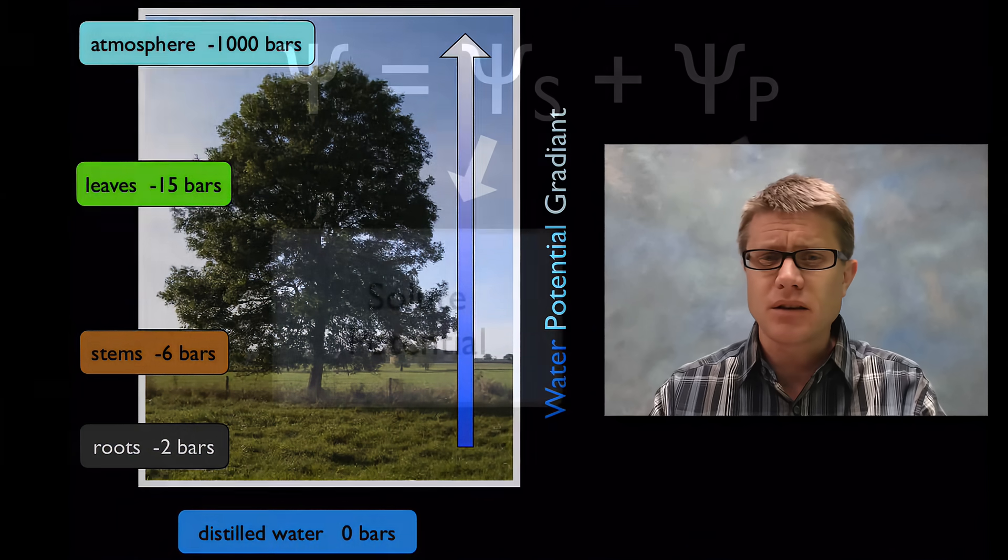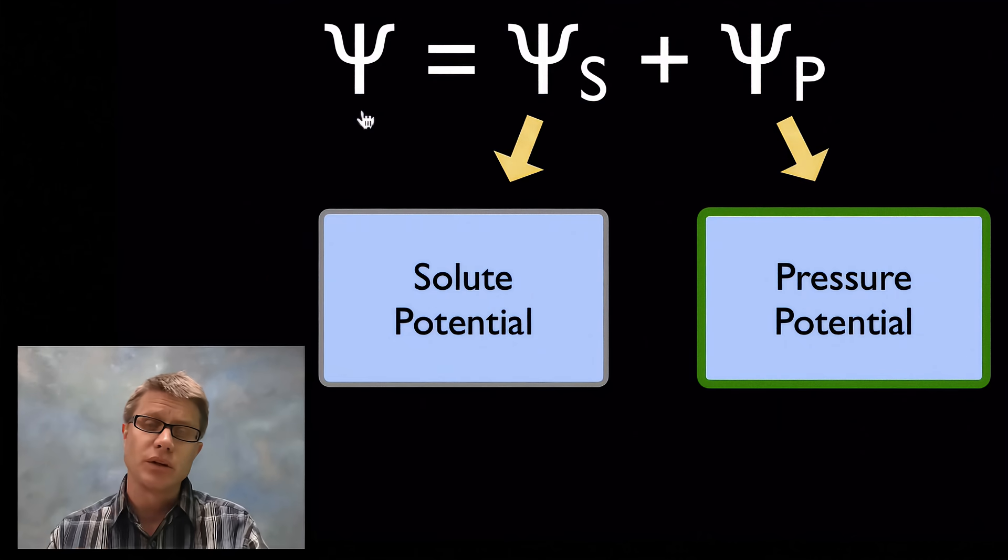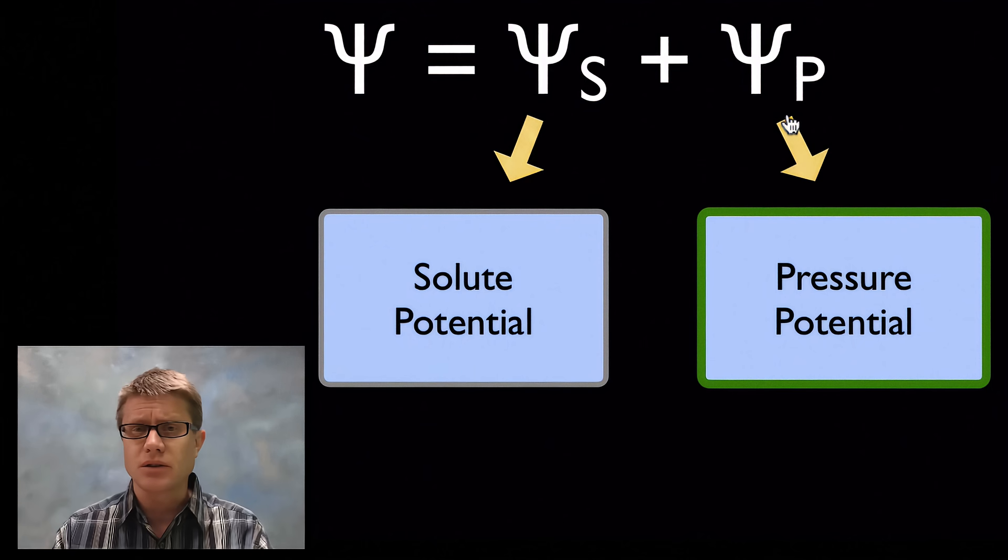Now let's get to those equations. So water potential is built on two things. It's built on the solute potential, think of that as like water flowing through osmosis, and then the pressure potential, and that's like physical squeezing of the cell.